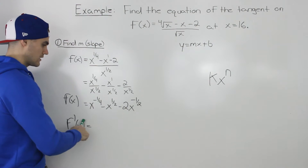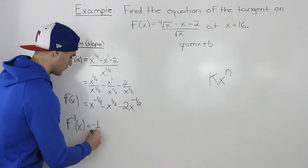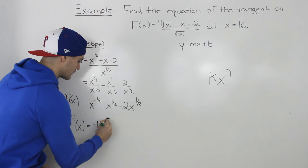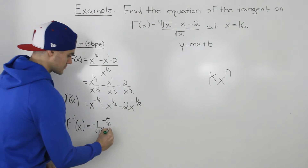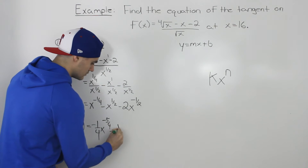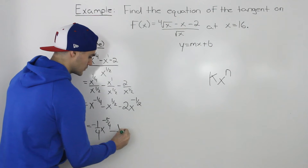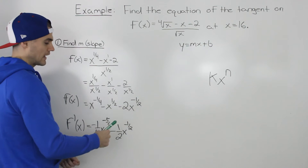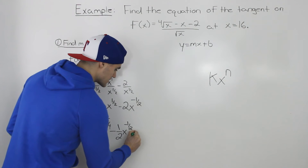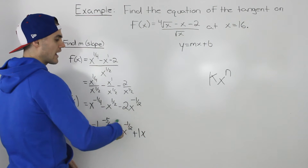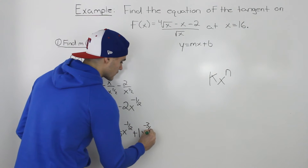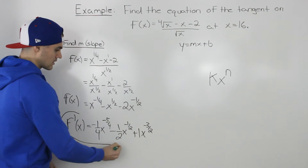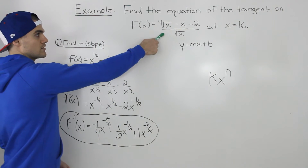Applying the power rule: for the first term we bring the negative 1/4 down, giving negative 1/4 times x to the power of negative 5/4. Then we subtract 1/2 times x to the negative 1/2. For the last term, bringing the negative 1/2 down, negative 2 times negative 1/2 gives positive 1, so we have positive x to the power of negative 3/2. This is the derivative of the function.